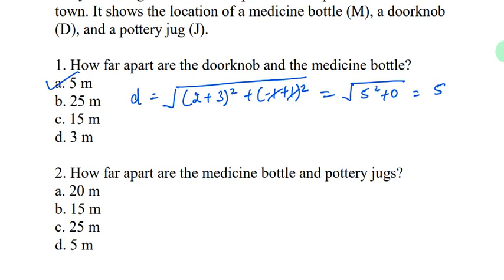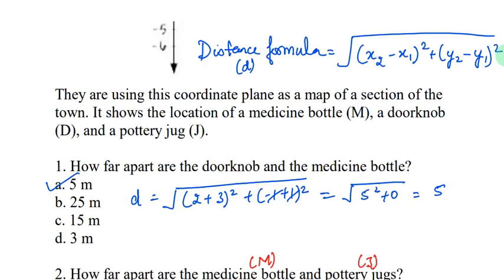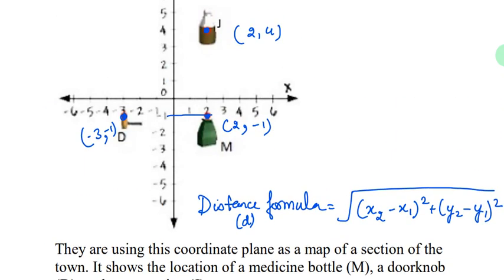Now let's move forward. How far apart are the medicine bottle and the pottery jug? Now we have to find the distance between M and J. We have these 2 points and we have to apply the distance formula.